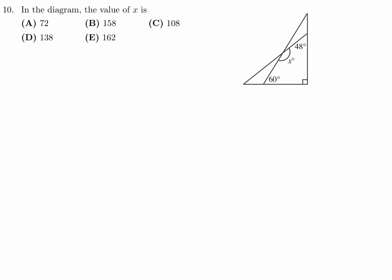In the diagram, the value of X is. This is 48, this is 90 — that's what that symbol means. So this is going to be 180 minus 48 minus 90, since the sum of the angles of a triangle add up to 180. And if you do that, you get 42. So I'll put 42 right in here. And then this angle is going to be 180 minus 60, because the sum of the angles about a line are equal to 180.